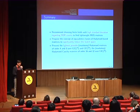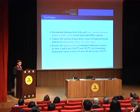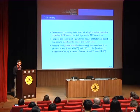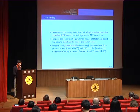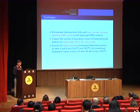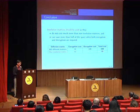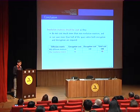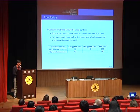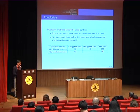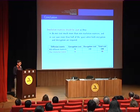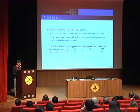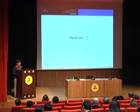To summarize: we recommend choosing finite fields with high standard deviation rather than polynomials with low Hamming weight. We propose the concept of equivalent classes of Hadamard-based matrices to reduce the search space. We present the lightest possible involution and non-involution Hadamard and Hadamard-Cauchy matrices. We conclude that involution matrices should be used because they do not cost much more than non-involution matrices — the non-involution Hadamard matrix has an XOR count of 37 versus 40 — and when both encryption and decryption are required, involution matrices can save more than half of the space.